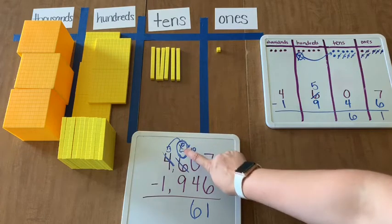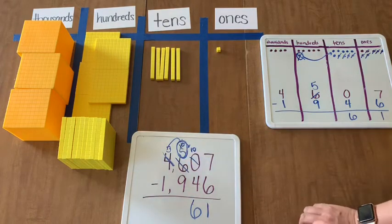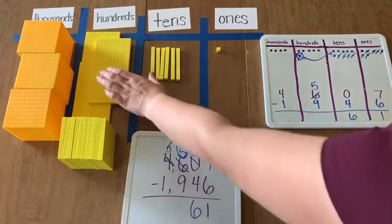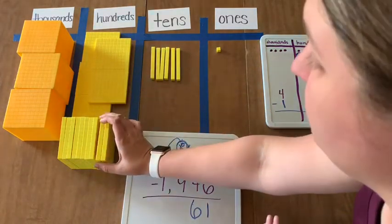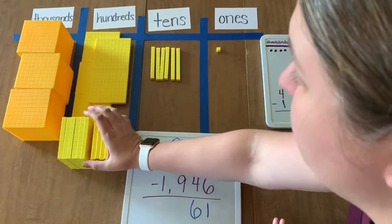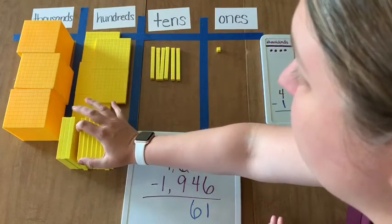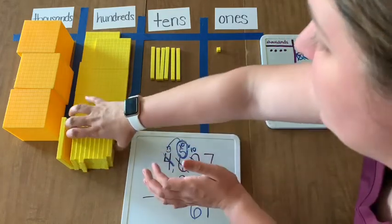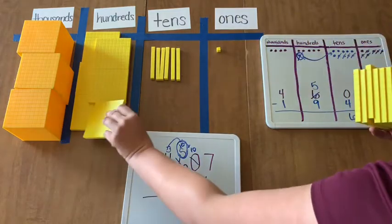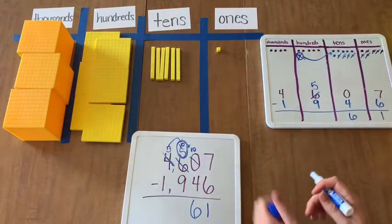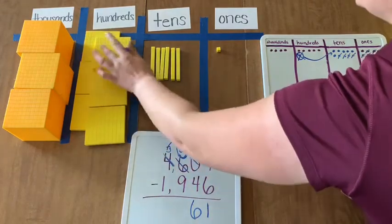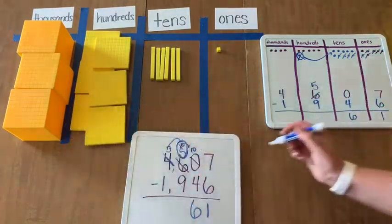15 minus 9 is, 1, 2, 3, 4, 5, 6, 7, 8, 9 hundreds that we're taking away. We have 100, 200, 300, 400, 500, 6 hundreds left.